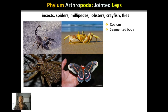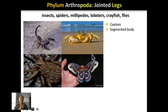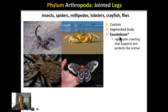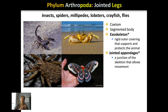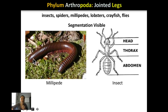Then we have phylum Arthropoda — the most diverse group of animals. Arthropoda means jointed legs. This group contains organisms with many jointed appendages, including insects, spiders, millipedes, lobsters, crayfish, flies, and scorpions. They all have a coelom and a segmented body. What is unique to arthropods is an exoskeleton — 'exo' means outside, so the skeleton is on the outside of their body. They also have many jointed appendages including their legs, tails, and antennae. Here you can see obvious segmentation in a millipede, and in an ant the body is segmented into a head, thorax, and abdomen.